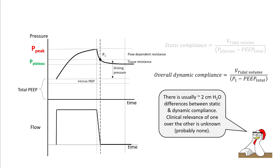To find overall dynamic compliance, you perform an inspiratory pause and look for the point where ventilator flow comes down to zero. The point where it intersects the inspiratory pause is known as P1. The driving pressure for dynamic compliance is P1 minus total PEEP. Dynamic compliance therefore includes tissue resistance in its measurement — there is usually around a 2 cm difference between static and dynamic compliance, and the clinical relevance of one over the other is unknown.